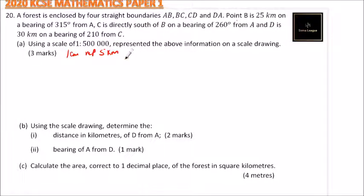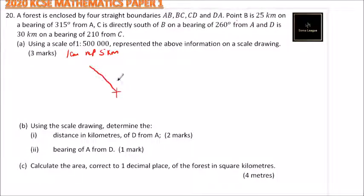The best approach is to first make a sketch and then draw the actual diagram. We start with point B, which is 25 km from A on a bearing of 315°, the same as 45°. This gives us 5 cm since 1 cm represents 5 km, and that brings us to B.